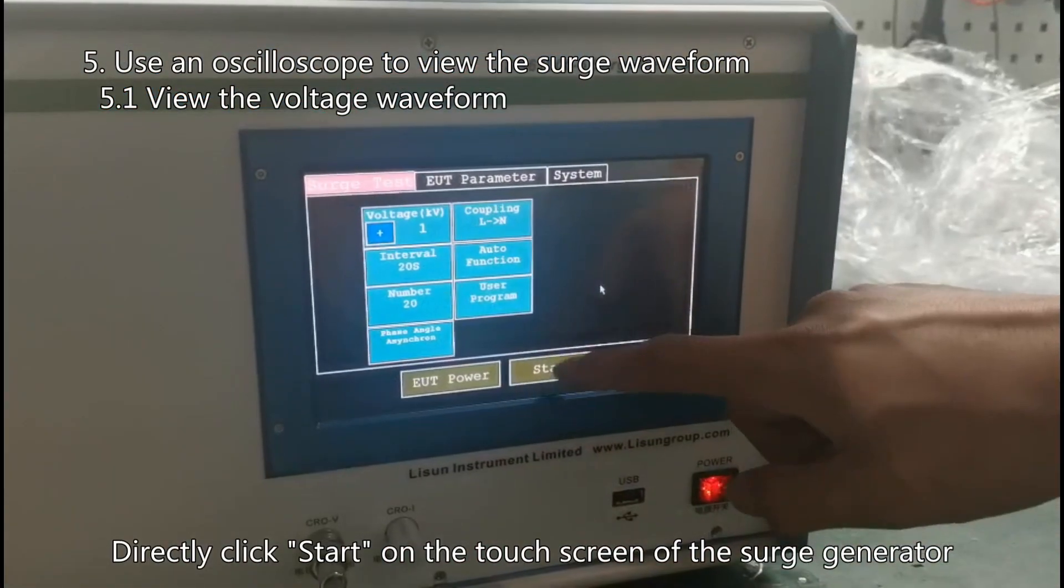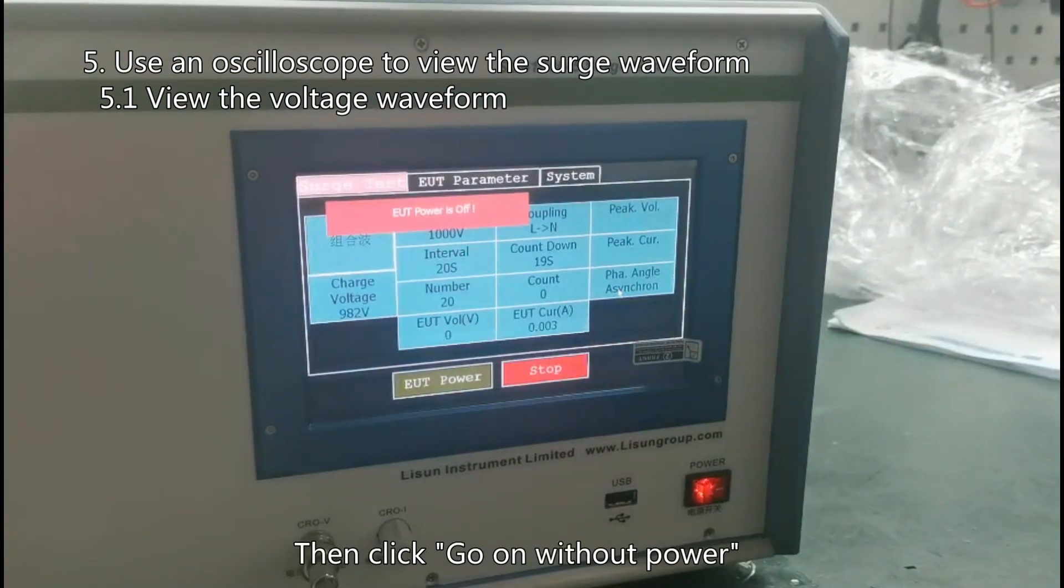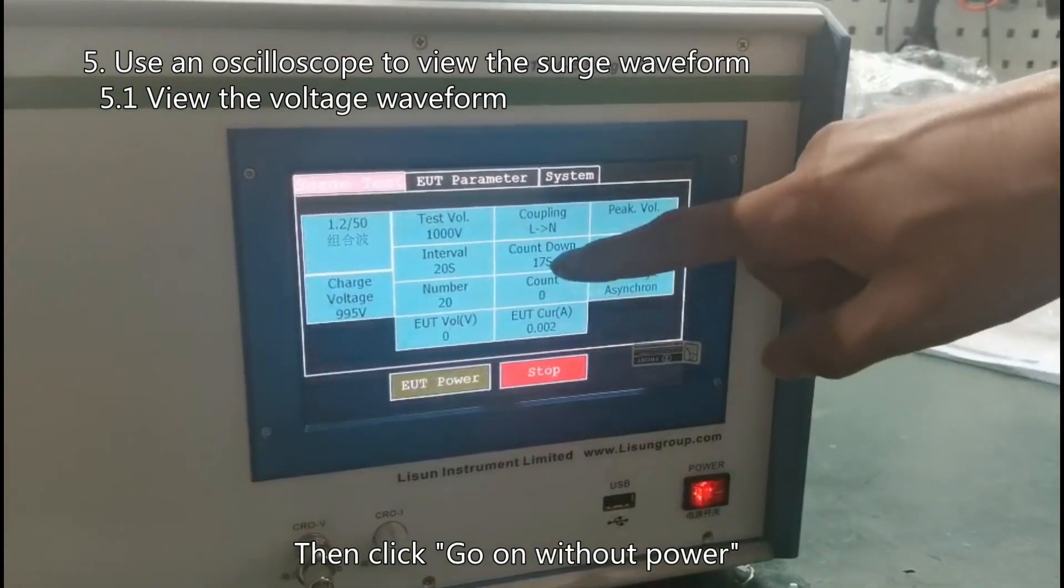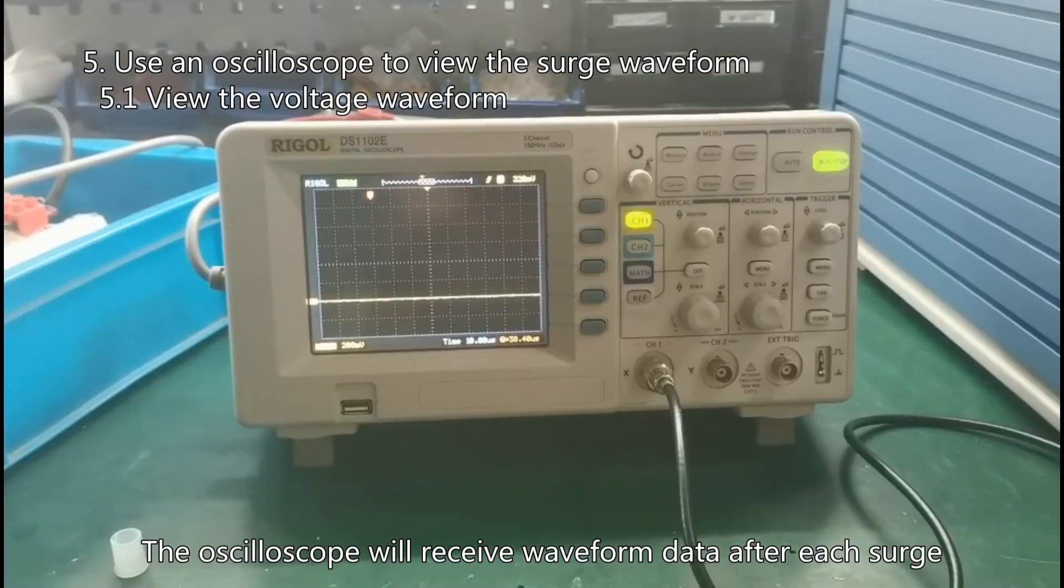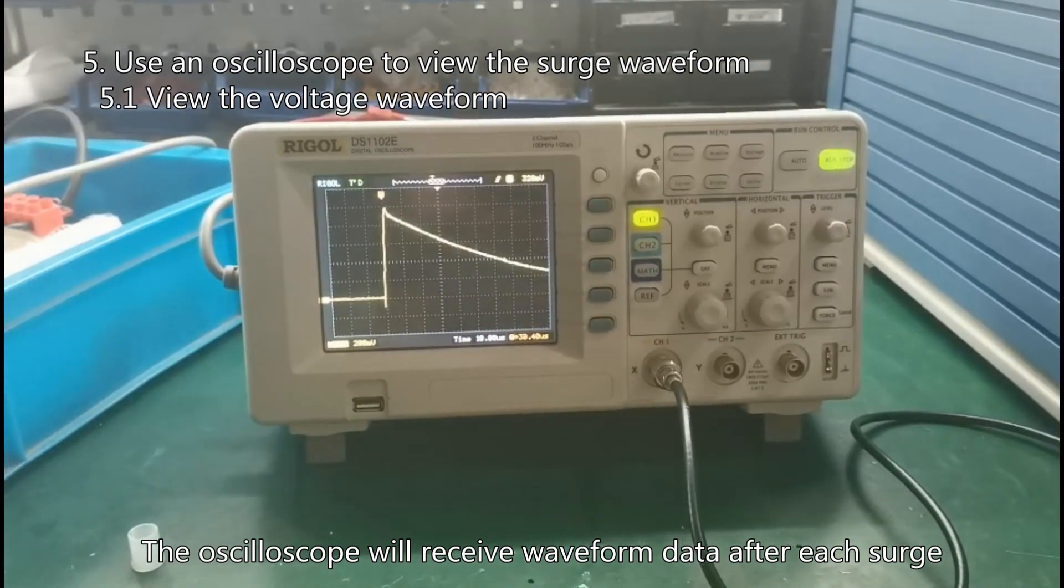Directly click start on the touch screen of the surge generator, then click go on without power. The oscilloscope will receive waveform data after each surge.